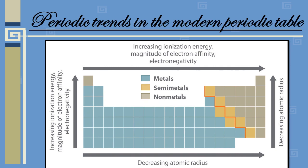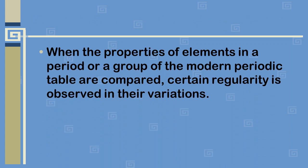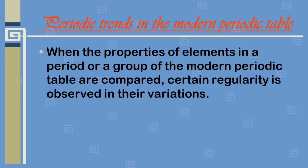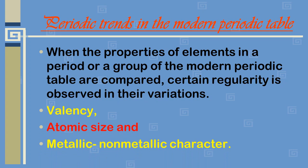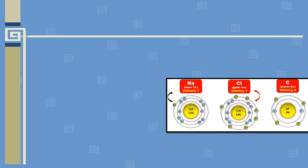Our next topic is periodic trends in the modern periodic table. When the properties of elements in a period or group are compared, certain regularities are observed in their variation. This regularity is called the periodic trend. In this lesson we will study property trends in valence, atomic size, and metallic and non-metallic character of different elements.